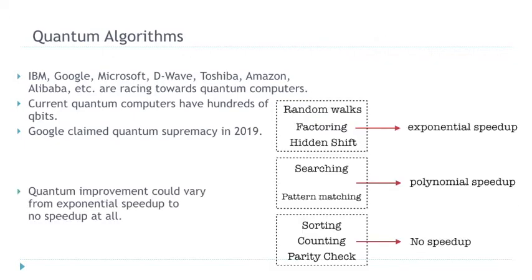Because of the advantage that quantum algorithms have, we expect that some of these problems can be solved faster. For example, there is a list of problems we can solve exponentially faster, many problems we can solve polynomially faster, and of course some problems where we know we cannot do anything better than classical algorithms. The question we ask in this work is exactly which category each fine-grained problem falls into — can we improve the runtime or prove there is no speedup?